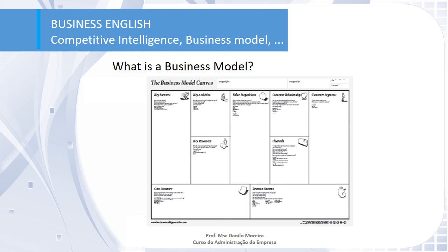This is the Business Model Canvas. It is only one single page where you organize in nine segments all the main thoughts and information you need to have about your business strategy.